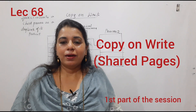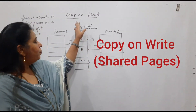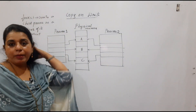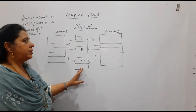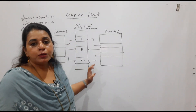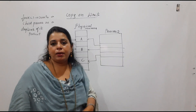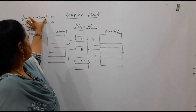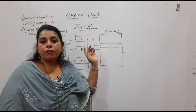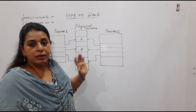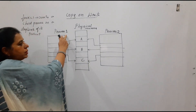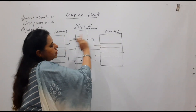Welcome back. The topic of discussion is copy-on-write. You will be learning how different pages present in memory are shared by two processes. The fork system call creates a child process as a duplicate of the parent. This process P1 is a parent process, and using the fork system call it has created a child process.